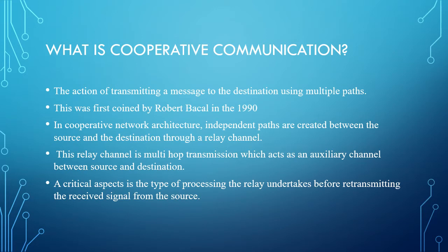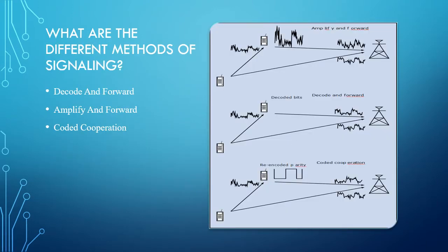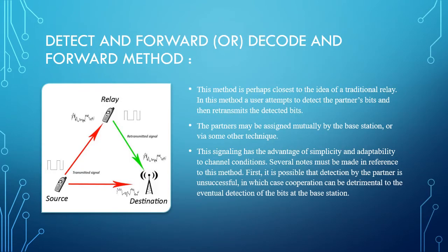There are a lot of aspects to be considered in cooperative communication, but first let's look at the different kinds of relaying systems and signaling methods used. There are three basic methods of signaling: decode and forward, amplify and forward, and coded cooperation. These are the basic signaling methods. The decode and forward method is considered closest to the traditional relay communication system.